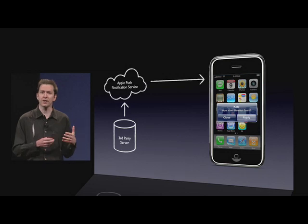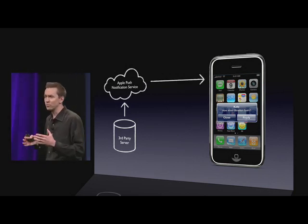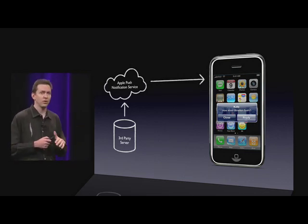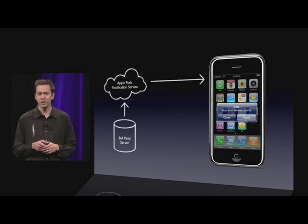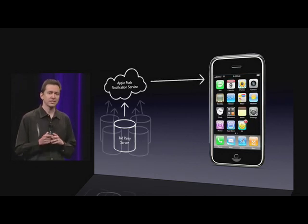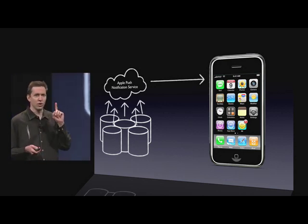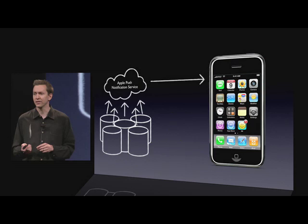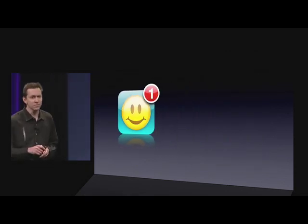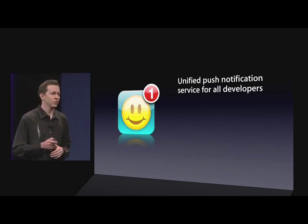And you can push custom textual alerts. They appear similar to the way our SMSs appear on the screen, so no matter what application you're in, you won't miss them. You can provide buttons on them where, if selected by the user, they will automatically launch your application. The great thing about this design is it scales — it scales to many third-party services, but still there's only one persistent connection needed to the phone. The push notification service is a unified push notification service for all developers.